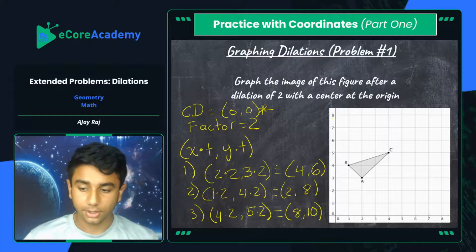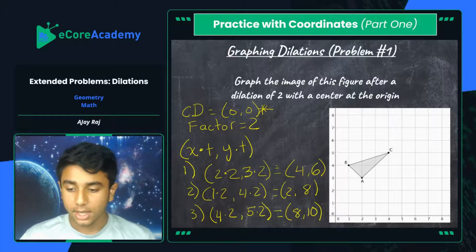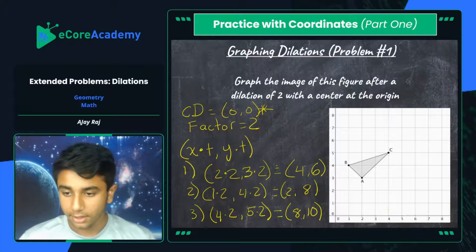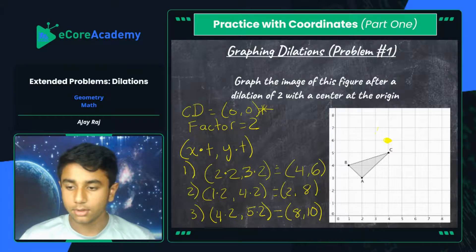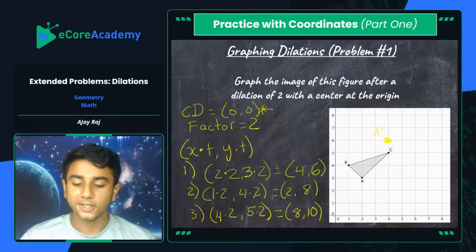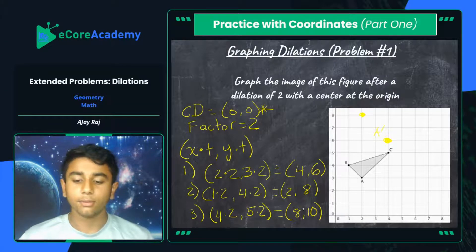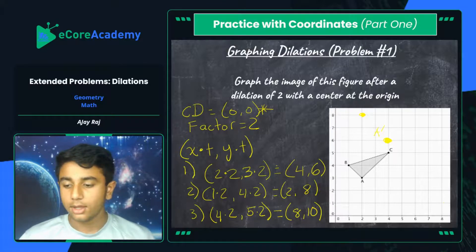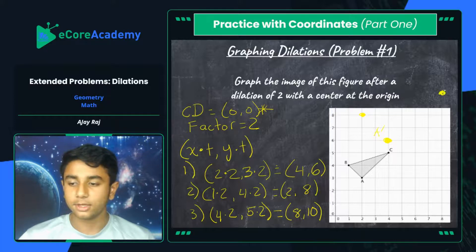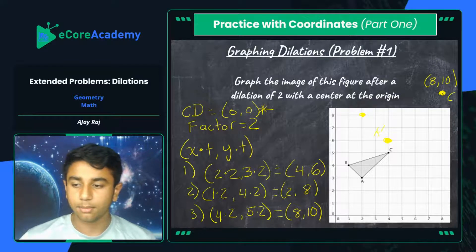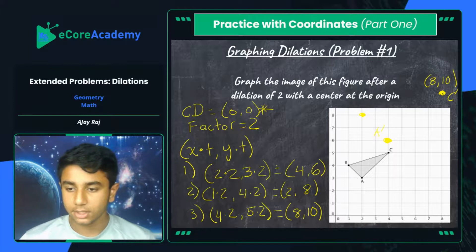Now let's graph those results. We graph (4, 6) right here — that's A prime. Then we take the second point (2, 8) and graph that. Then our final point (8, 10) — since 10 is near the edge of the graph, we estimate its position and mark it as C prime. We connect those dots to complete our dilated figure.